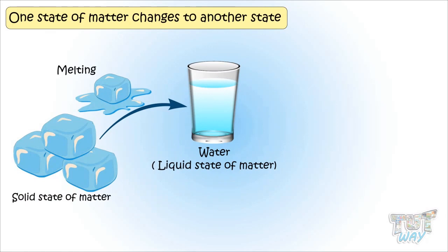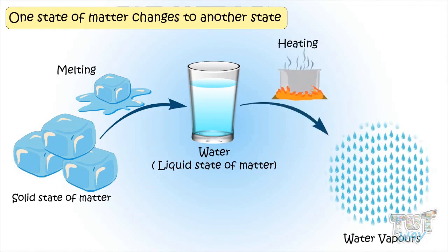So melting changes solid state of matter into liquid state of matter. Now when water is further heated, it changes into water vapors, which is gaseous form of matter.